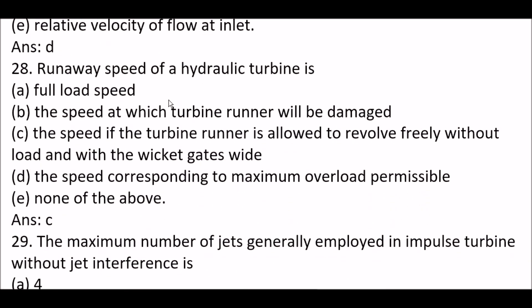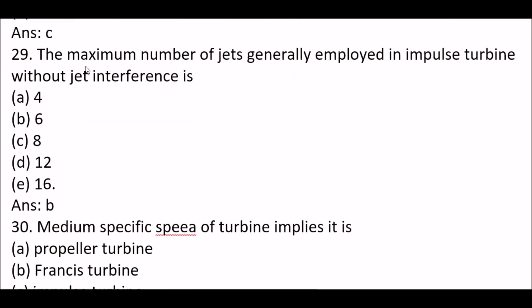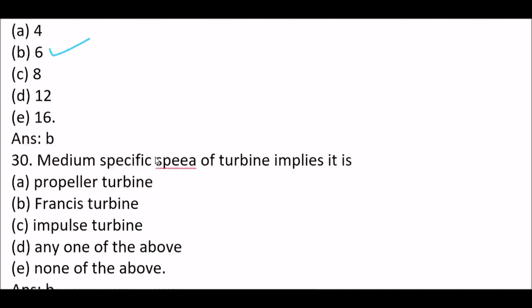Next question. Runaway speed of a hydraulic turbine is option C, the speed if the turbine runner is allowed to revolve freely without load and with the wicket gates wide. Next question. The maximum number of jets generally employed in impulse turbine without jet interference is option B, 6. So maximum number of jets generally employed in impulse turbine without jet interference is 6.